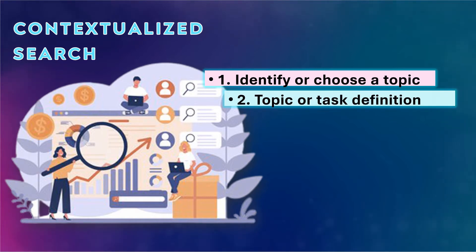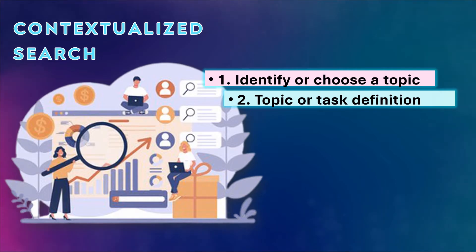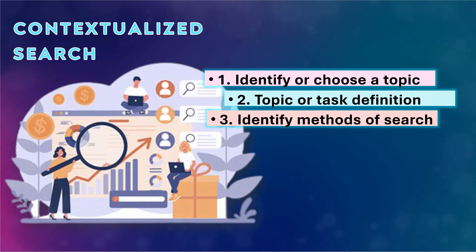Number two is topic or task definition. With the help of the internet, use Google search, Wikipedia, or other sources to be able to define the topic or task. The internet will be able to provide you with a glimpse of what you want to understand and define.